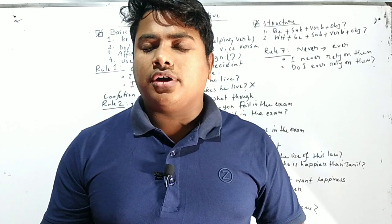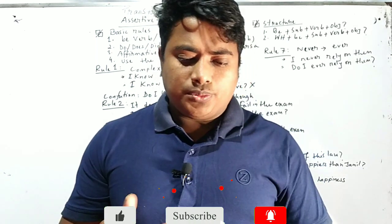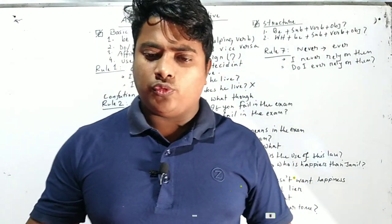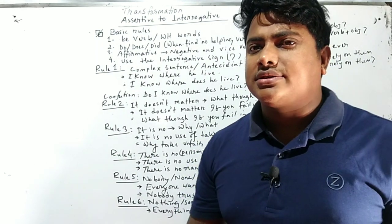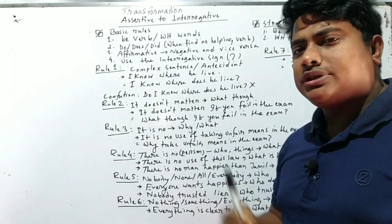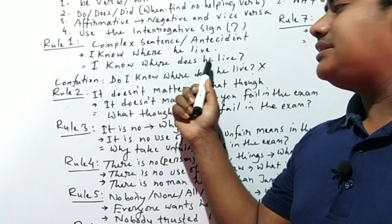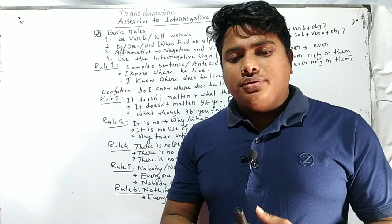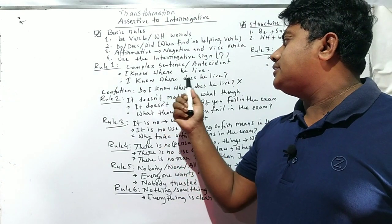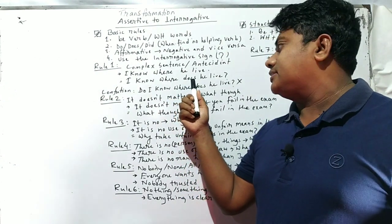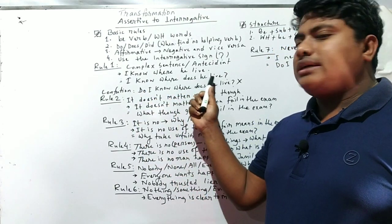For example: 'I know where he lives.' This is an assertive sentence. Many students feel confused with this type of sentence. To convert it to interrogative, remember that a WH word takes an auxiliary or B-verb. So here, 'where' is followed by 'does' as the auxiliary verb: 'I know where does he live.'